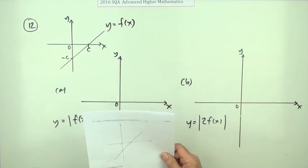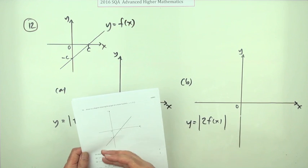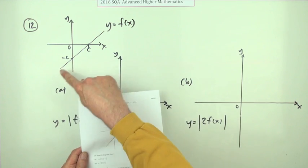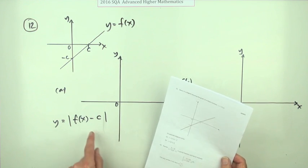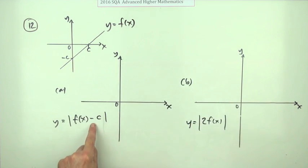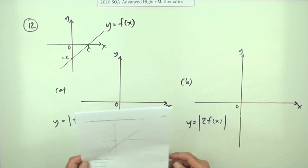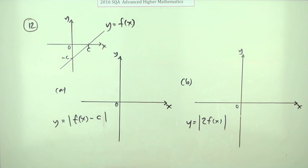Question 12 from the 2016 Advanced Higher Maths. We've got transformations of functions - a very simple straight line and very simple transformations. If that's f(x), for the first part, which is two marks, you have to drop it down by a certain amount and then apply its absolute value. For the second part, worth four marks, you have to double it and then give its absolute value.